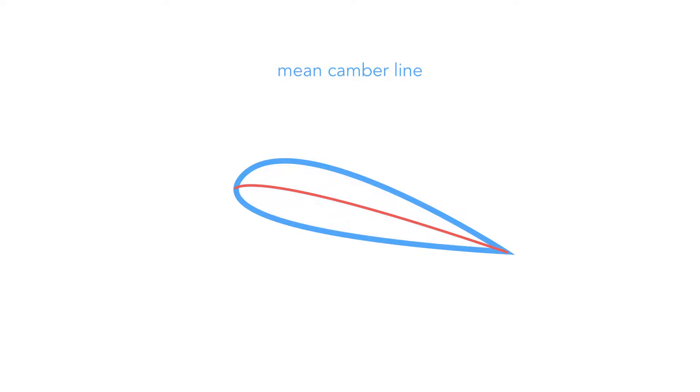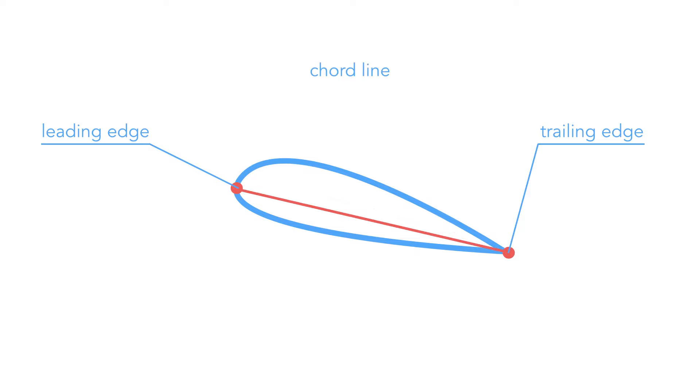The point where the camber line meets the front end of the wing is called the leading edge. The point where the camber line meets the rear end of the wing is called the trailing edge. When you join the leading edge with the trailing edge by a straight line you get the chord line.